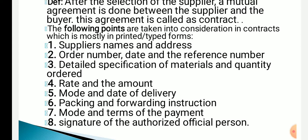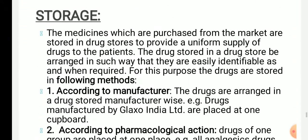The contract also contains: packing and forwarding instructions, mode and terms of payment — that is, the mode of transportation such as railway or road — and the signature of the authorized official person.